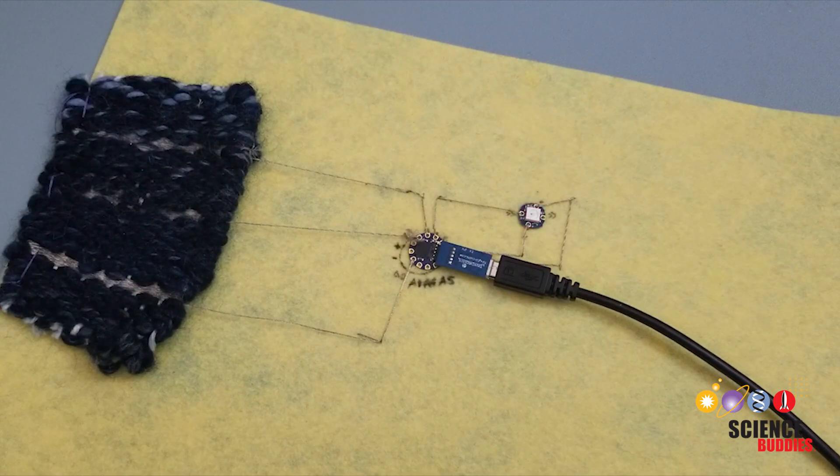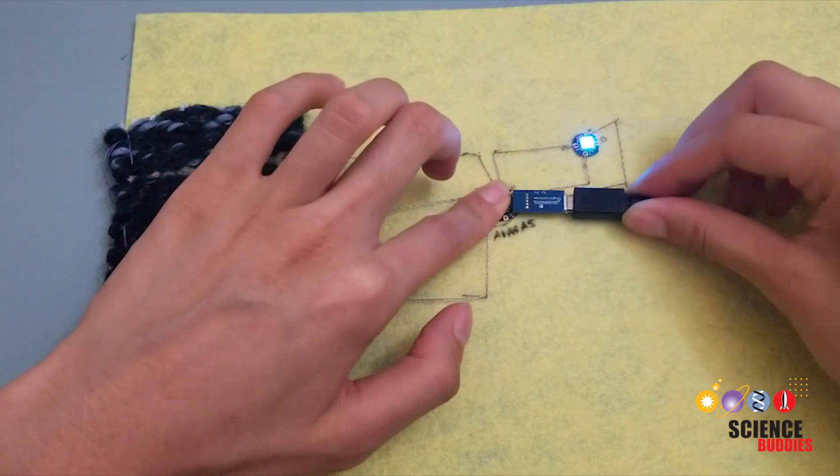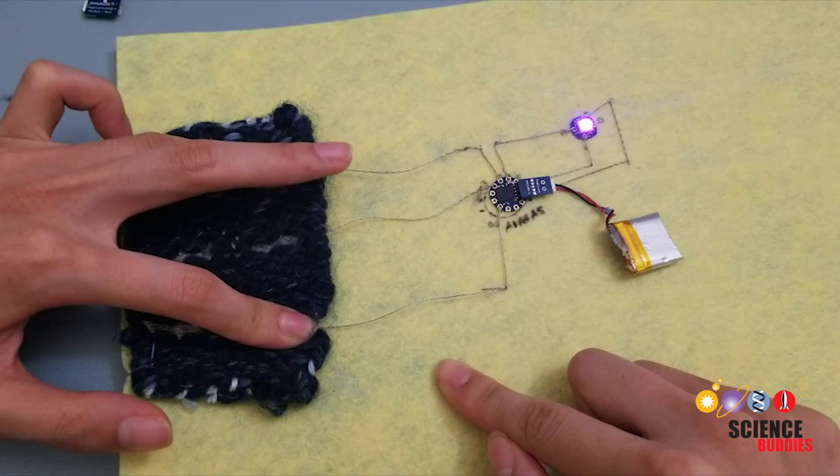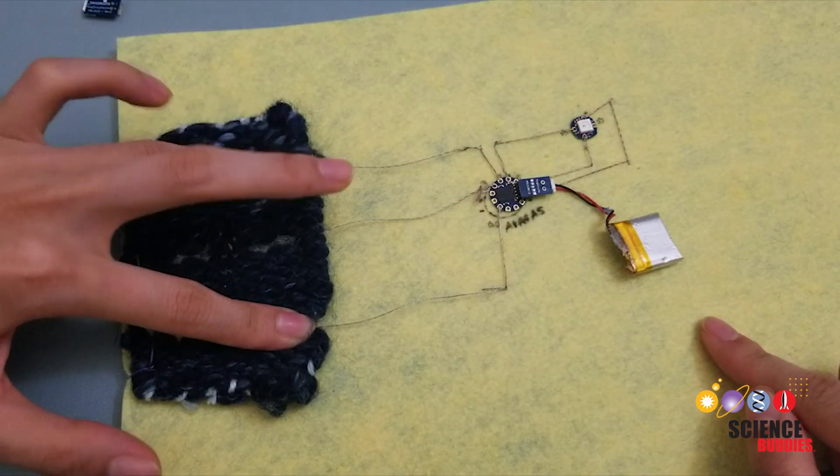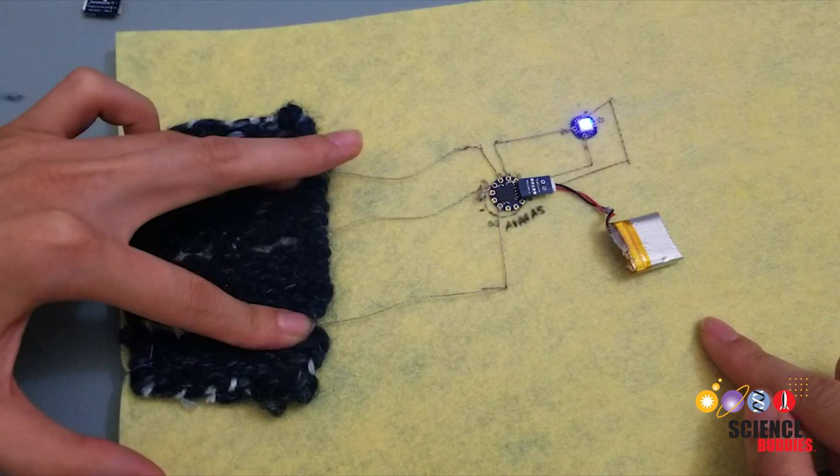If not, double-check your conductive thread's connection pins. Switch your USB adapter with your battery adapter and power the Tiny Lily with the LiPo battery. You are now done with your woven touch sensor.